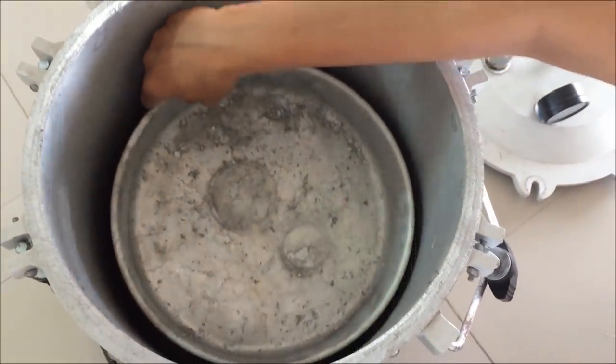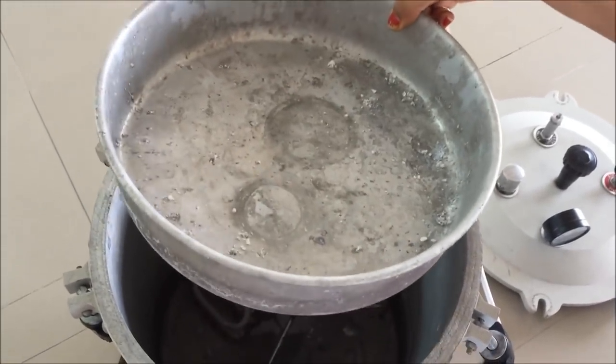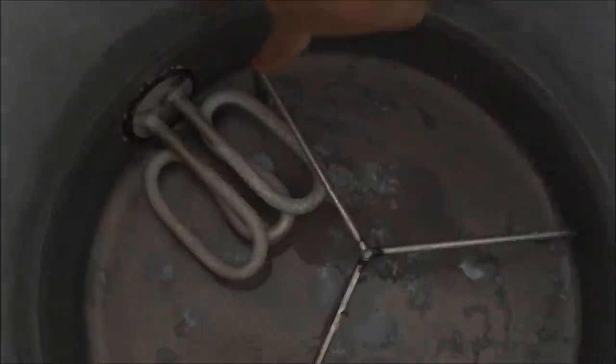This is the inner view of autoclave. It is a tray. It serves a basic purpose to keep the object which has to be sterilized. And at the bottom of autoclave there are two small parts.